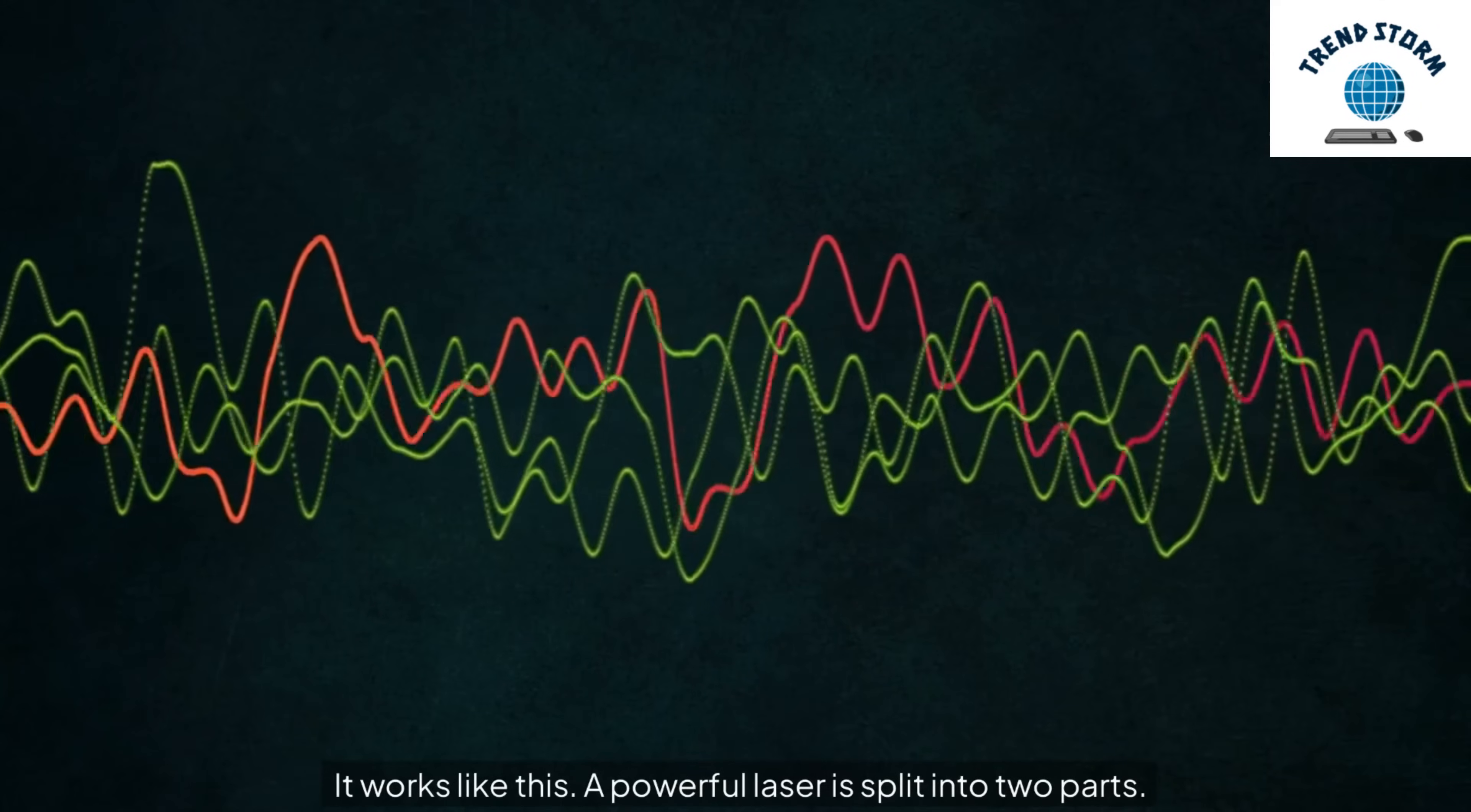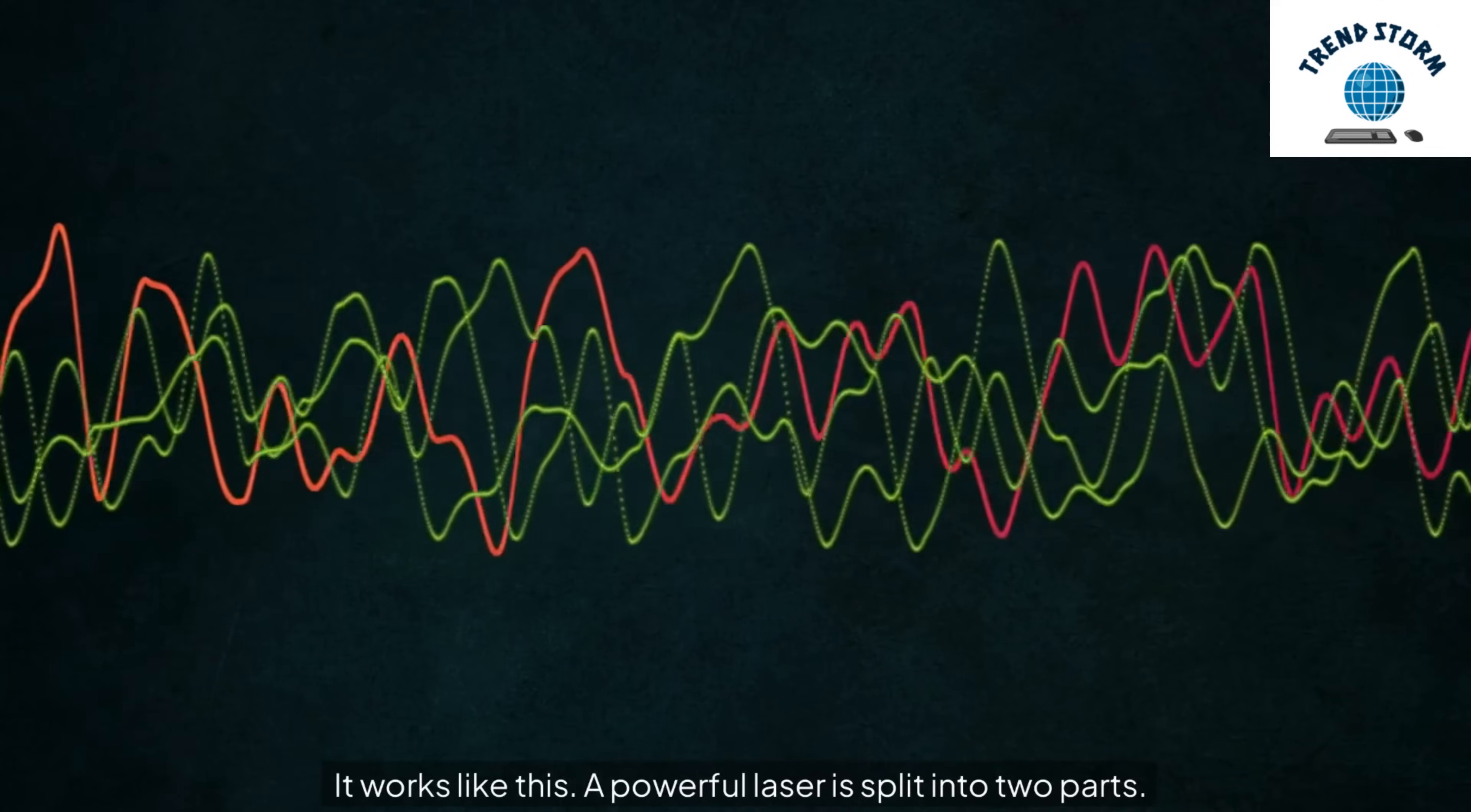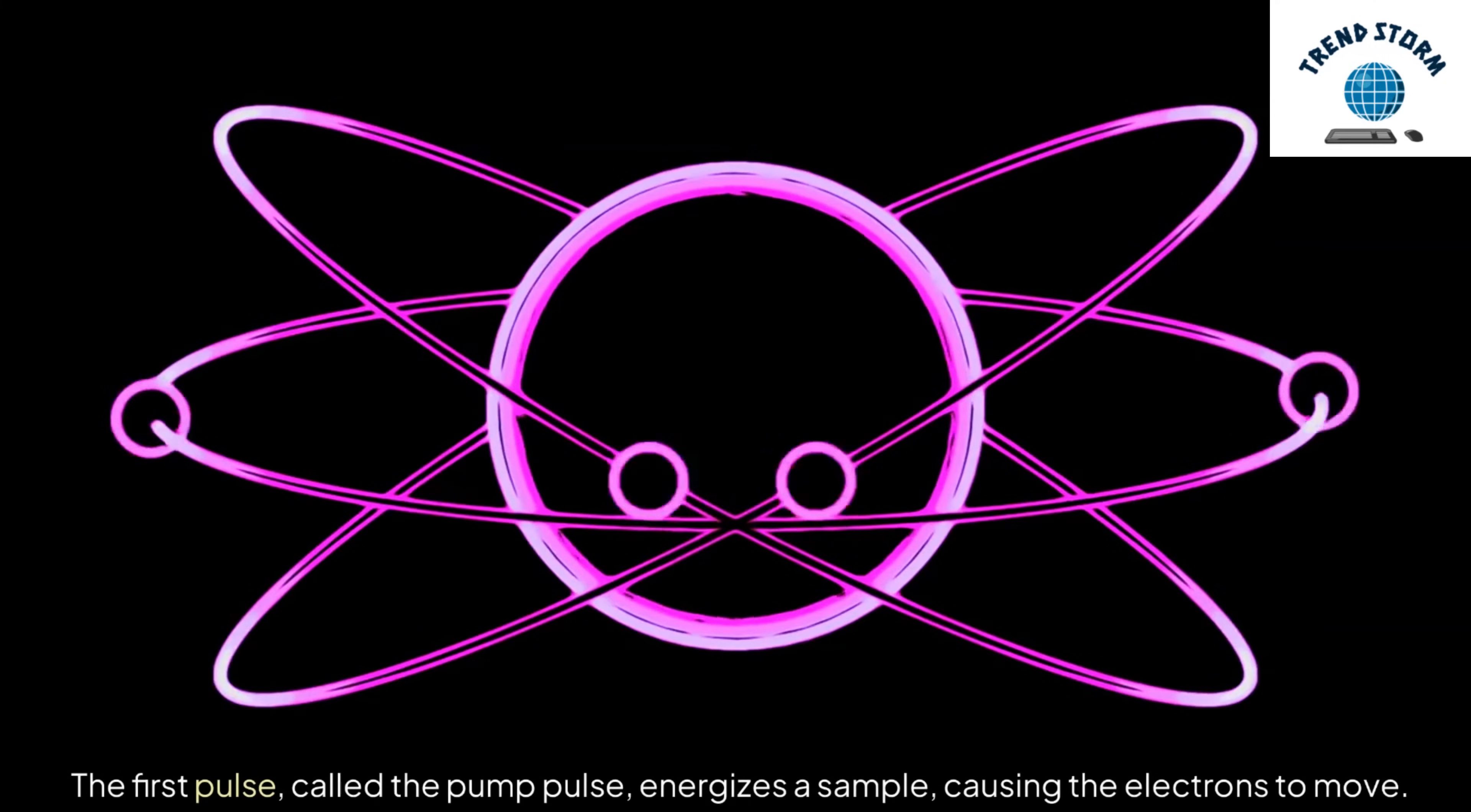It works like this. A powerful laser is split into two parts. The first pulse, called the pump pulse, energizes a sample, causing the electrons to move.